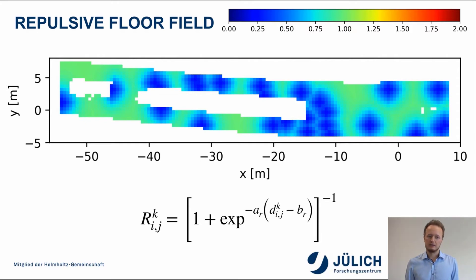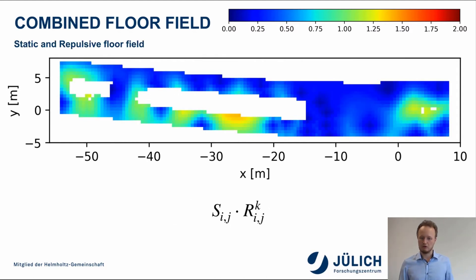But this is only to a certain extent. If you want to pass somebody, you would try to show that you have a distance of, let's say, 2 or 3 meters, but you don't really care if your waiting position is 10, 50 or even 100 meters away from each other pedestrian. Combining this with the result of the static floor field leads to this combined floor field. As you can see here on the bottom of the ramp, where we had before a preferable waiting position, and now another pedestrian has occupied this space, this is not relevant anymore for our pedestrians.